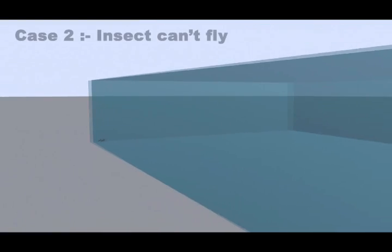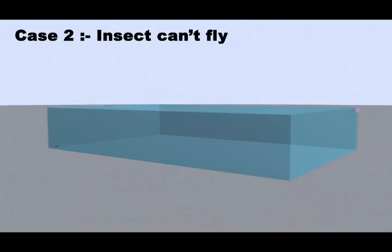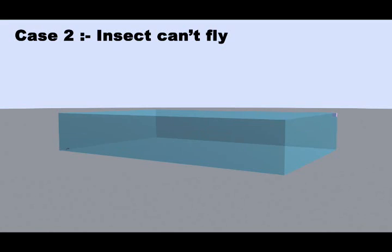Now let's alter the problem a little bit. Let's say it's an insect that cannot fly and has to crawl along the walls of the cuboid to reach the sweet. Now what do you think will be the shortest distance it has to cover?